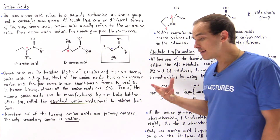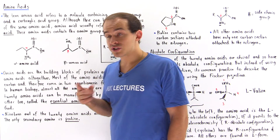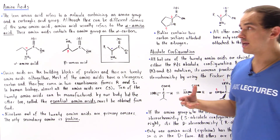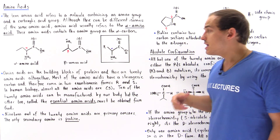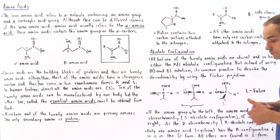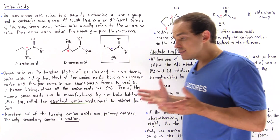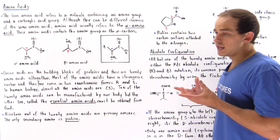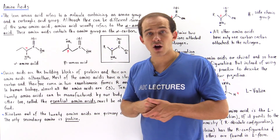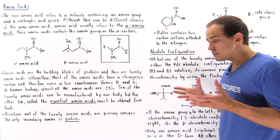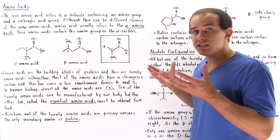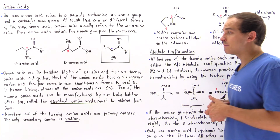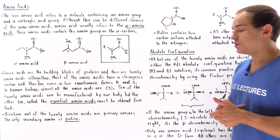All the amino acids our body uses are alpha amino acids, which is why when we say amino acid we generally mean the alpha amino acid. Amino acids are the building blocks of proteins, and all the proteins inside our body consist of 20 different amino acids — no more and no less.